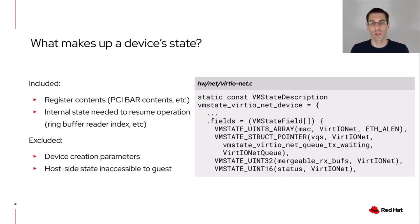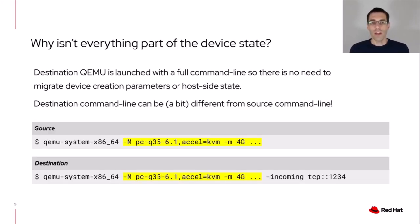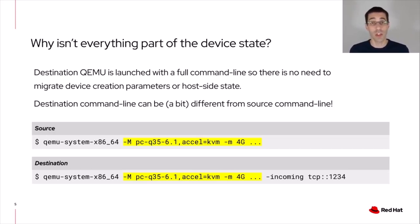There are a few things that don't go into the device state. It includes the device creation parameters as well as other host-side state that's inaccessible to the guest and therefore not relevant to the continued operation of the device. There's no technical reason why QEMU's device state is split and limited in this way — it's just how it was implemented. The reason is that the destination QEMU is actually launched with a full QEMU command line that specifies all of the devices you want on the destination VM. Live migration doesn't involve starting an empty shell QEMU; instead, the destination is a full-fledged VM with all devices configured. So the device state is really just the runtime state of the device.